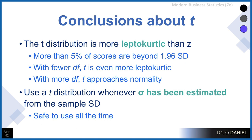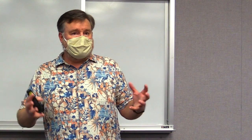Here are some conclusions about the t-distribution. First, the t-distribution is a little more leptokurtic than the z-distribution, meaning more than 5% of scores are beyond 1.96, so we need to make an adjustment based on degrees of freedom. With fewer degrees of freedom or smaller sample sizes, the t-distribution is even more leptokurtic. But as we increase degrees of freedom, the t-distribution approaches a normal distribution. Use a t-distribution whenever sigma has been estimated from the sample standard deviation. Regardless of your study, it is safe to use Student's t-distribution for almost all applications.